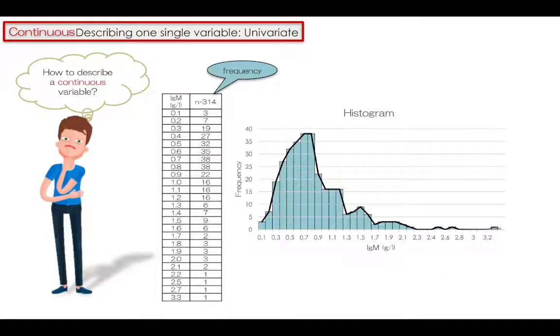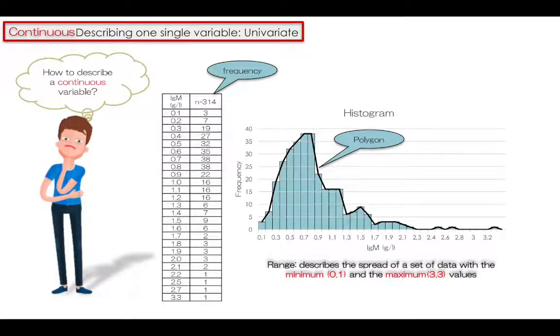That's also a descriptive statistic that we can show. We may give more information such as range as minimum and maximum values, but they are not enough. We need more mathematical values to describe a continuous variable.